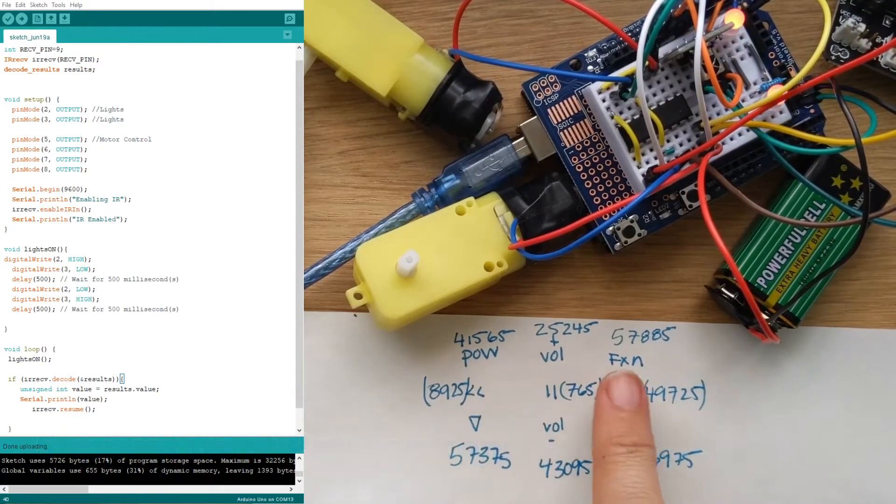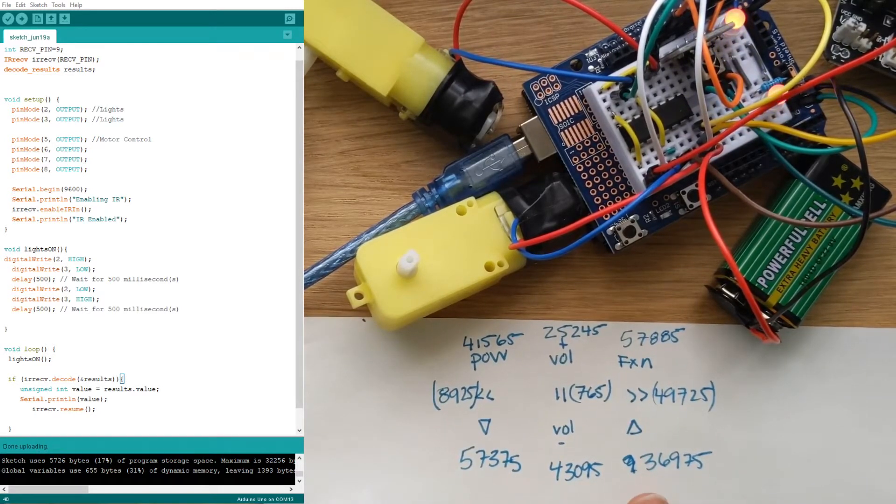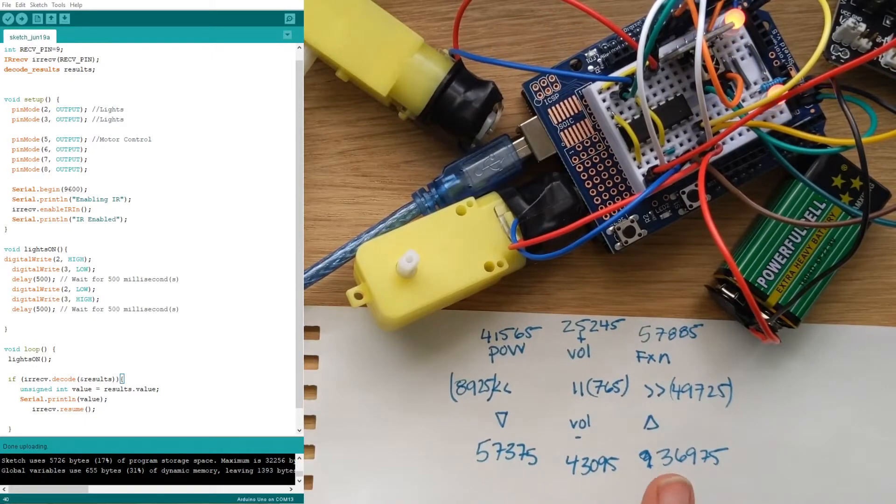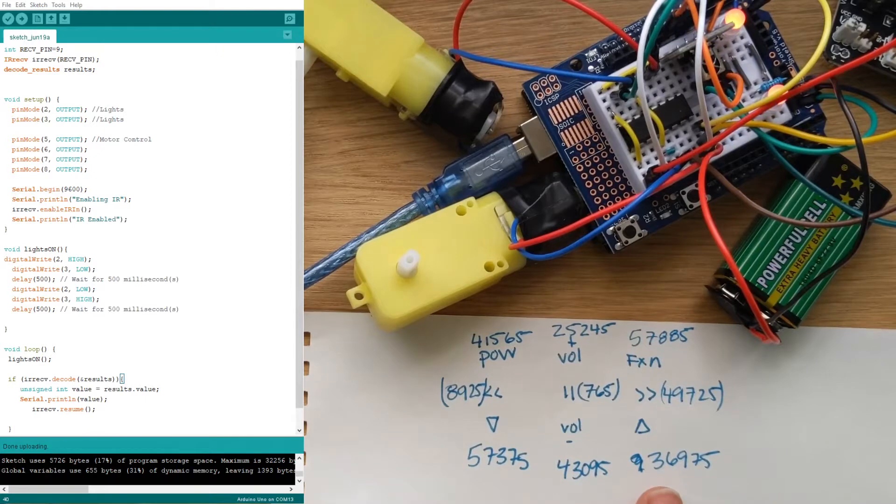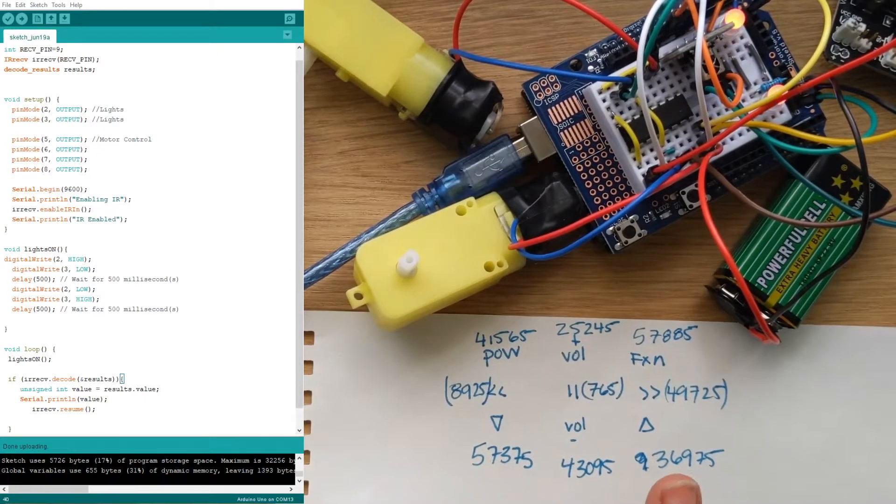We learned how to use the remote and now we're gonna use the codes that we got from the remote. That's a previous lesson, so if you don't have your remote codes check out that previous lesson. We're gonna use these codes today to start programming what our car can do.